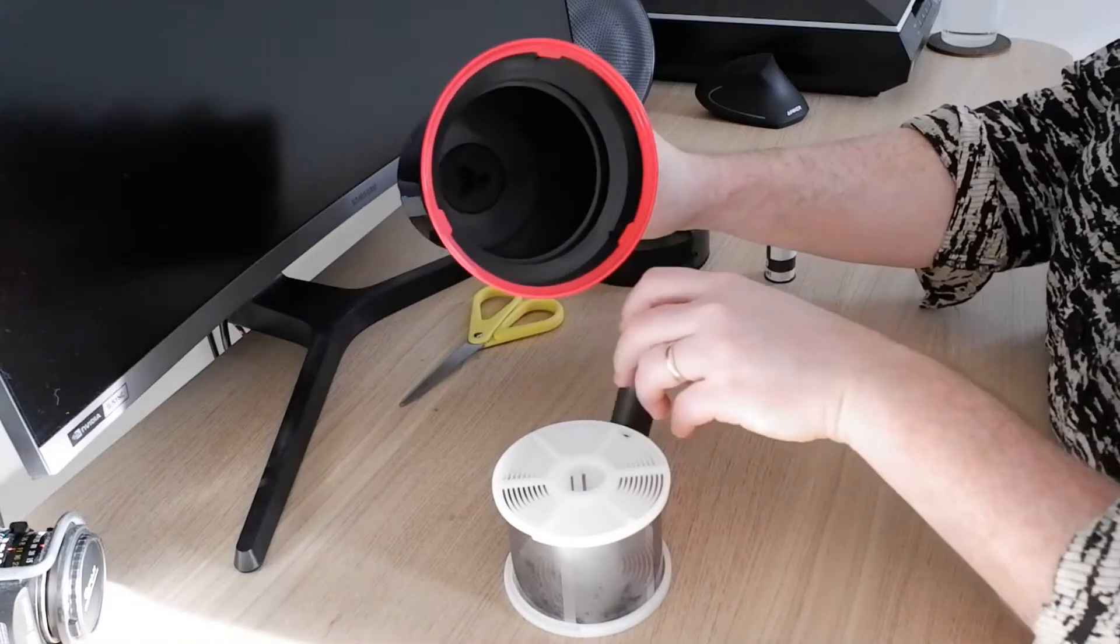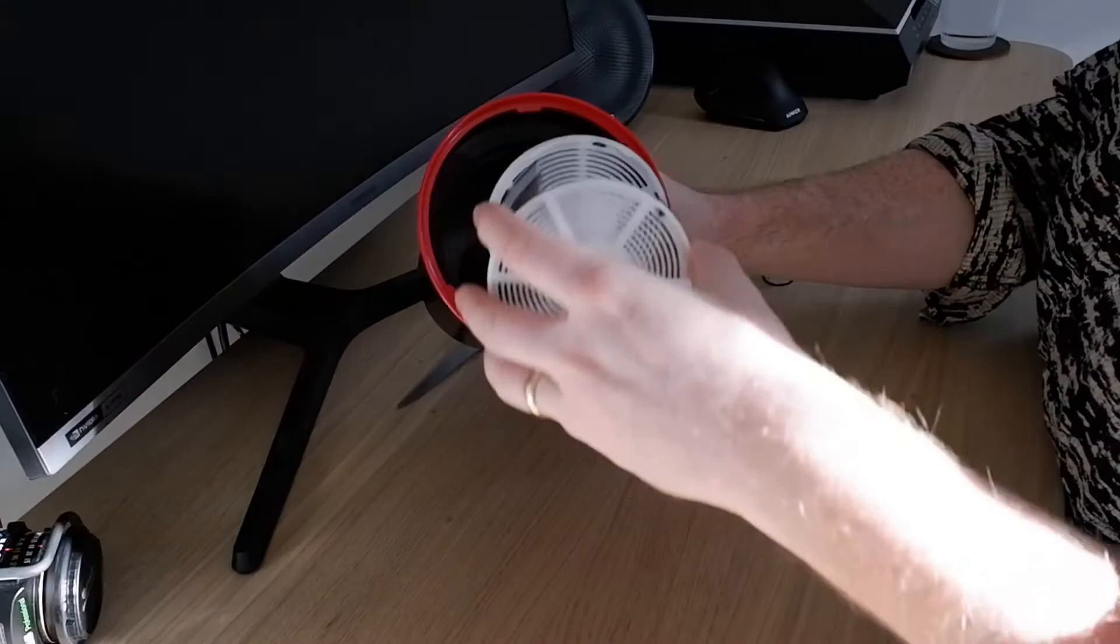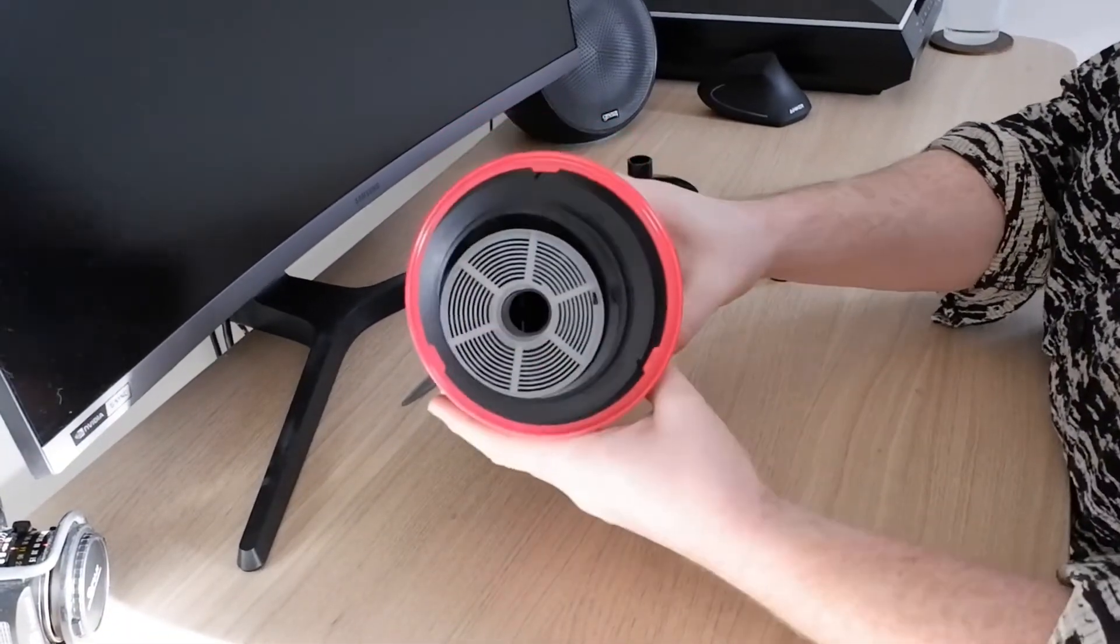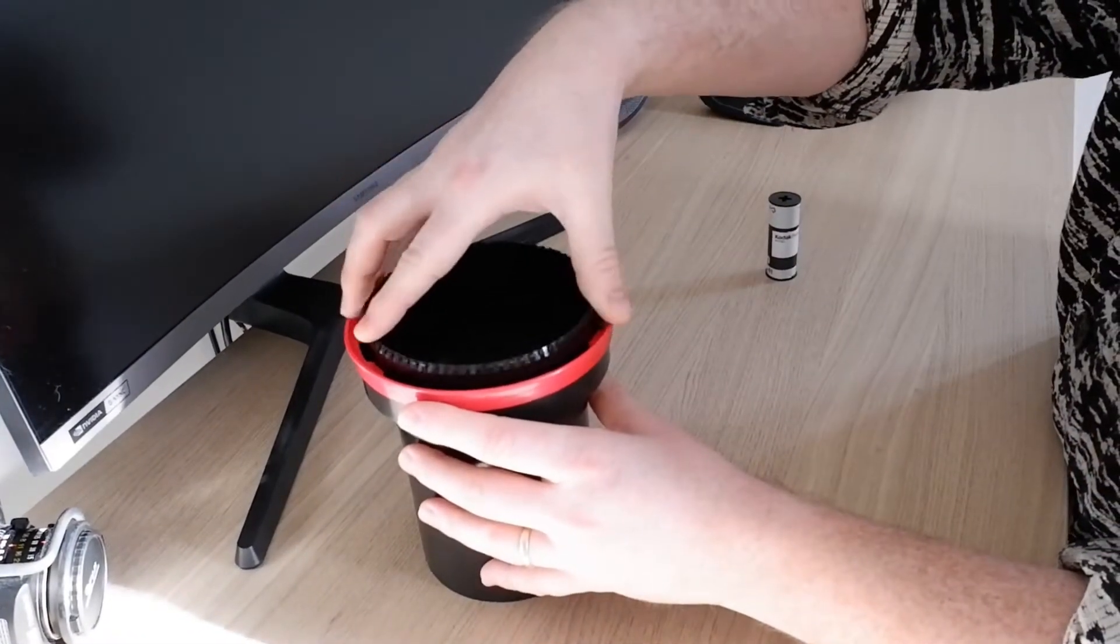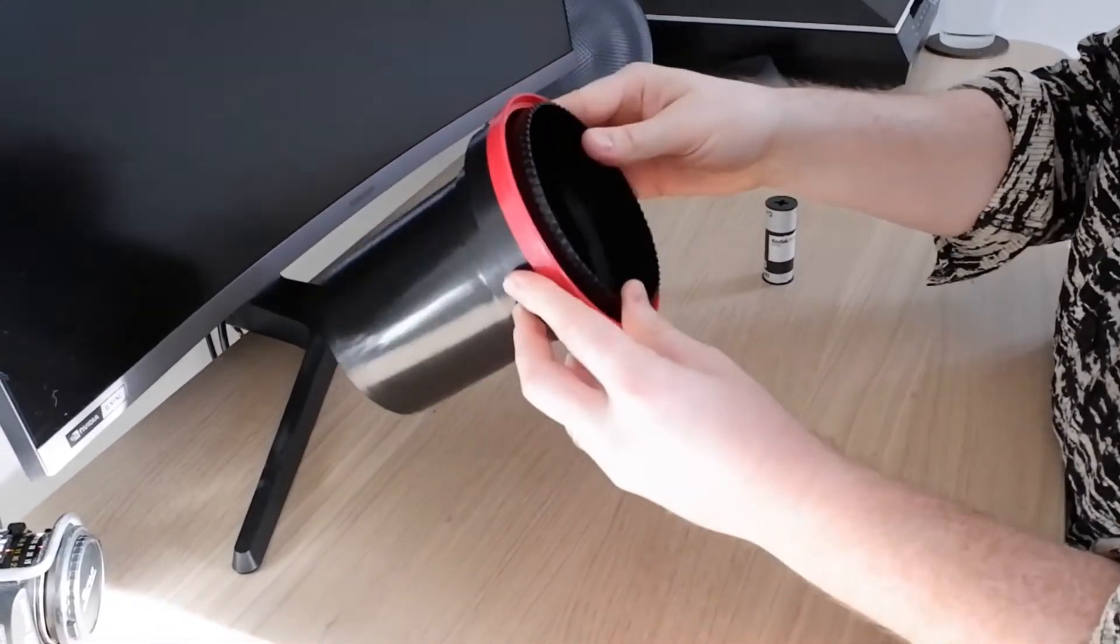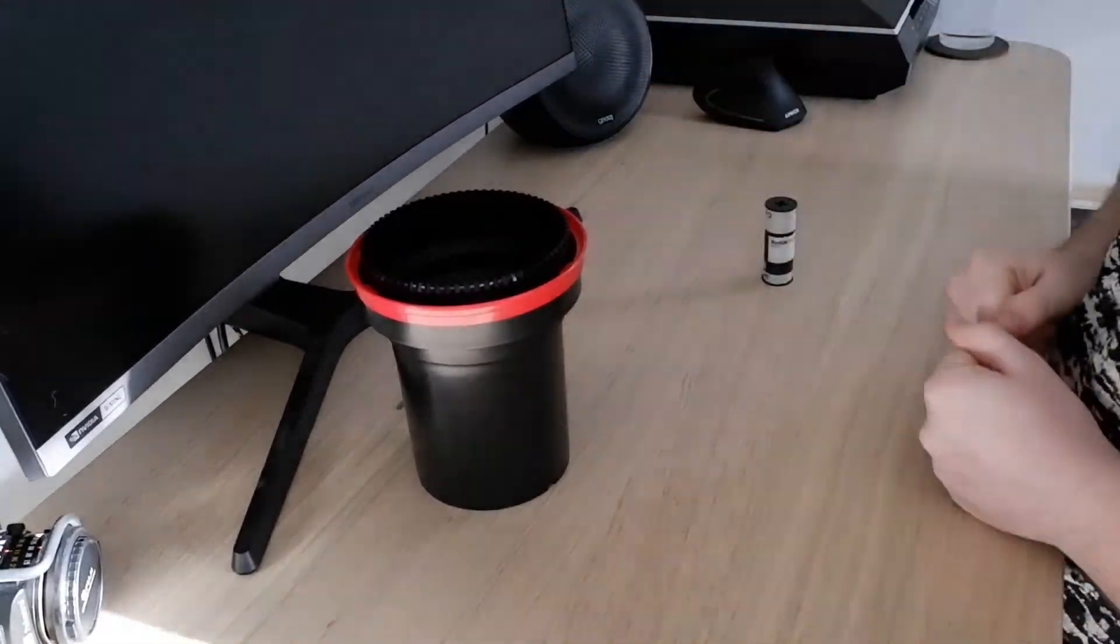Next you're going to need to assemble it in the dark, so this is a demonstration really just how the tank goes together. Put the central column in and then the reel. The central column is important because it's what makes it light tight. Without that, even if you crank this top on like this, I hear the click, it won't be light tight. So yeah, you're just going to have to do that in the dark, is the only challenge.